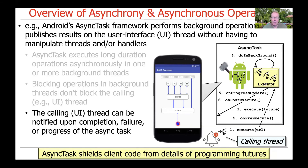The user interface thread — the calling thread — can be notified when things are finished, either successfully or unsuccessfully. It can also be notified if something fails, and can be notified incrementally during the processing of the long-running computation. In essence, the AsyncTask framework shields client code from the details of programming this asynchronous computation and having to access the futures directly.